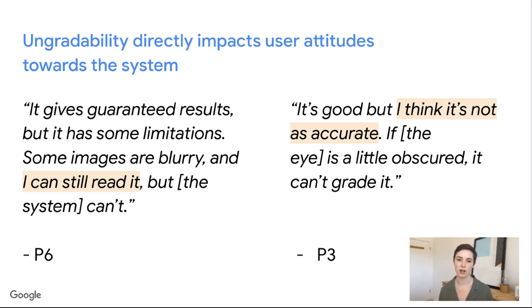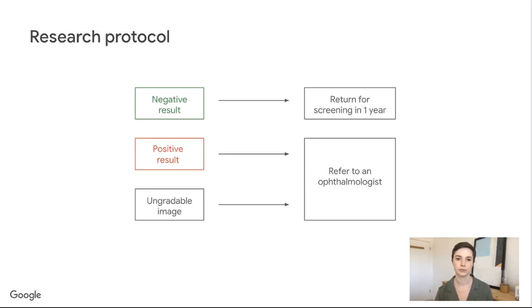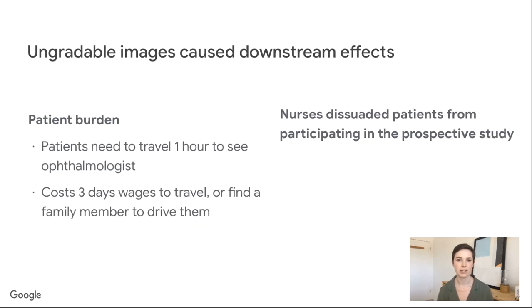Because the image quality threshold for gradability didn't match nurses' previous practices of grading, it caused some frustration. They were used to doctors in Thailand who were willing to read all images, even if they were too dark, because doctors are able to look at the whole case of the patient and make an informed decision on how likely it is that the patient has DR. Whereas our tool only receives and makes assessments of DR based on fundus photographs. The ungradability rate caused nurses to think that it wasn't as accurate. We also found challenges with our protocol. Our protocol stated that in the case of an ungradable image, to be on the safe side, a patient should be referred to an ophthalmologist. But that ophthalmologist was at a hospital an hour away, and many folks couldn't afford the transport cost or the time to take off work to go.